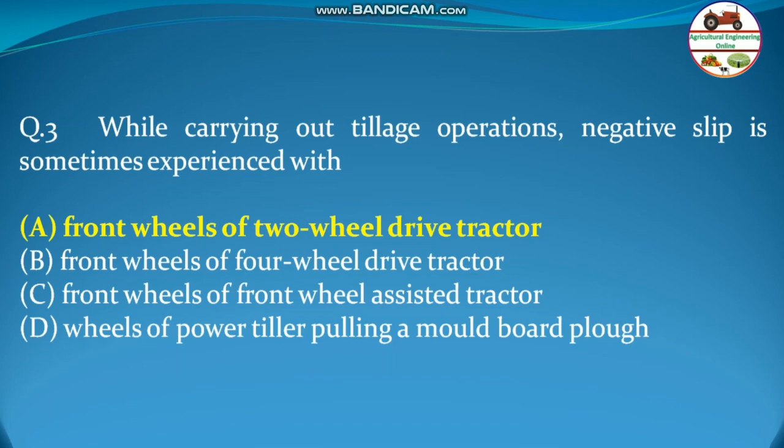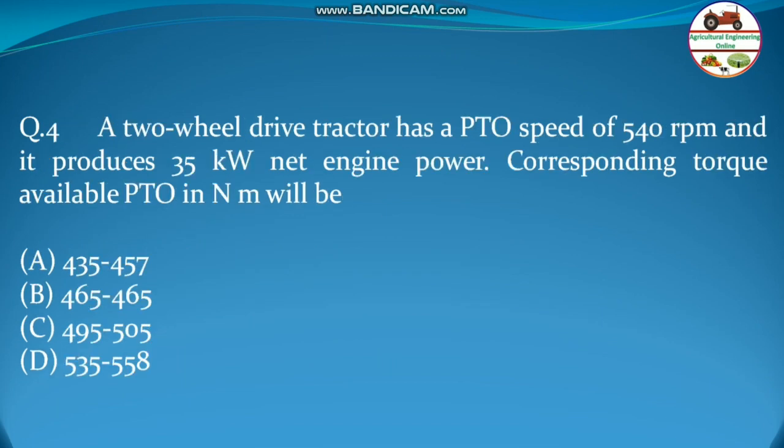Next question: a two-wheel drive tractor has a PTO speed of 540 rpm and produces 35 kilowatt net engine power. The corresponding torque available at the PTO in Newton-meters will be — options given range from 35 to 558.